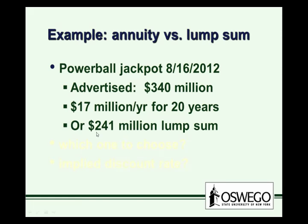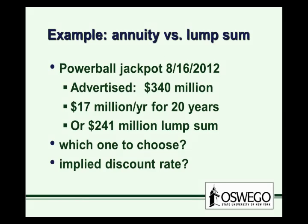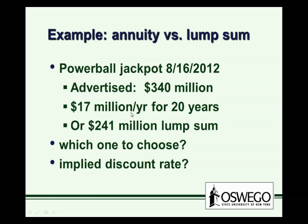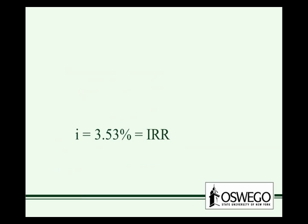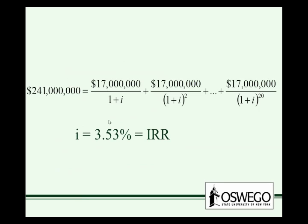So you can take the payments or take the lump sum — which one would you choose? And given that choice, what does it imply about your discount rate? We'd like to figure out what discount rate would make $17 million a year for 20 years equal to a present value of $241 million. Excel makes this easy using the RATE function: 20 years, payments of $17 million, present value of $241 million entered as a negative.